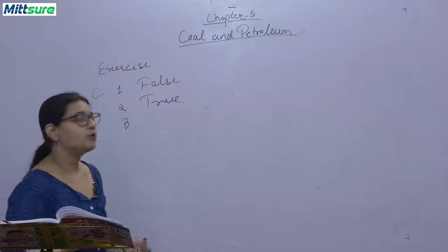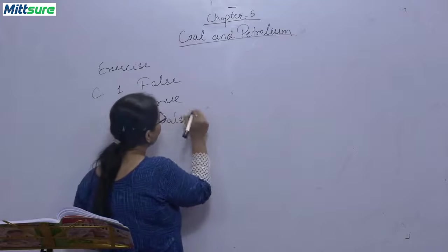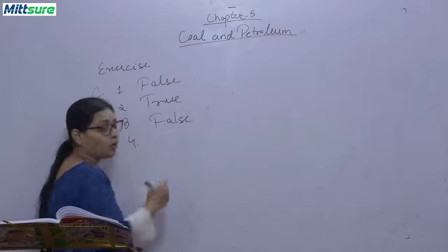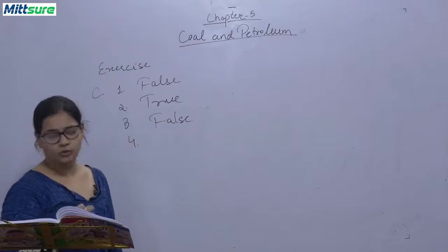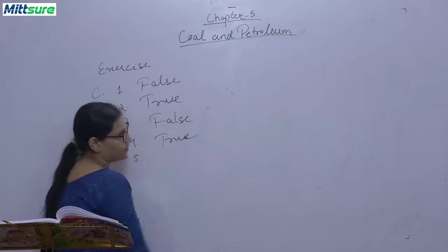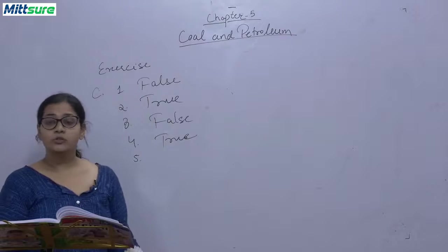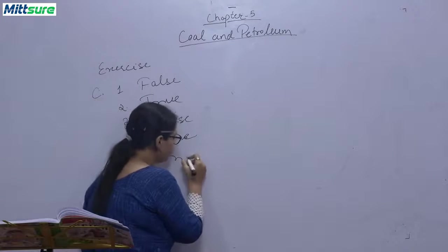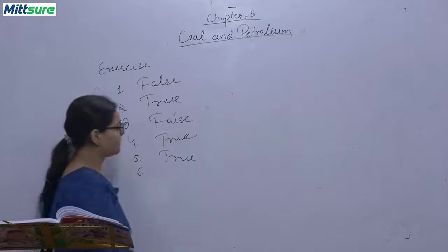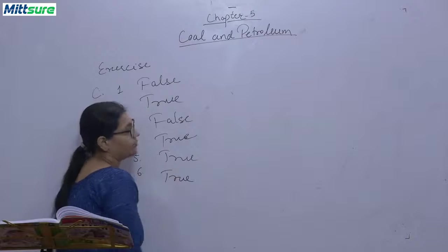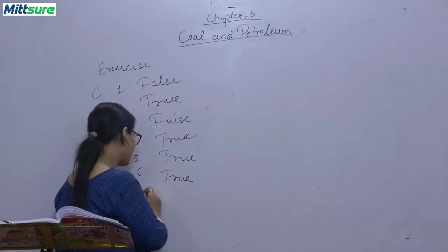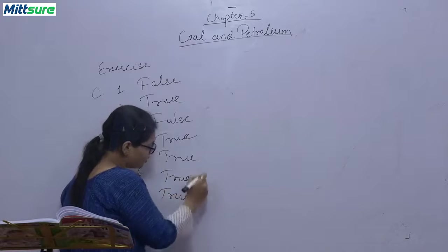Fourth, coal is a high cost energy resource. It is true, it is a high energy cost resource. Fifth, kerosene is used for cooking and lighting lamps. It is also true. Sixth, LPG is an inflammable substance. It is also true because it can catch fire very easily. Seventh, natural gas mainly consists of methane and it is also true. So please note down these answers.